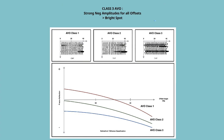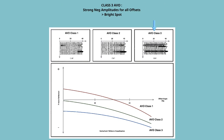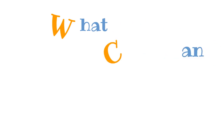Class 3 AVO starts with negative amplitudes in the near offsets and ends up with even stronger negative amplitudes on the far offsets, resulting in a bright spot on the stacked image. The theory is rather simple, but what can go wrong?